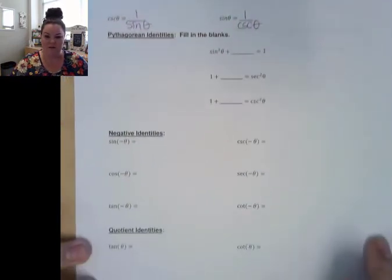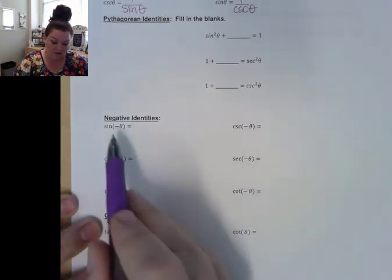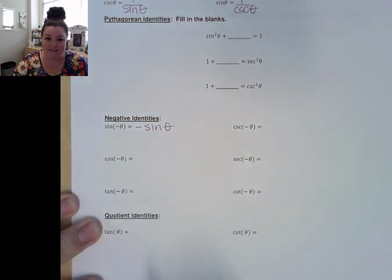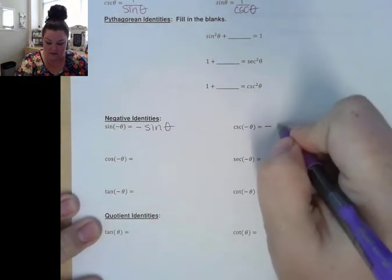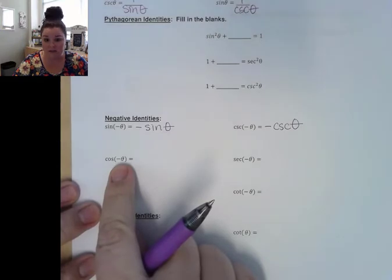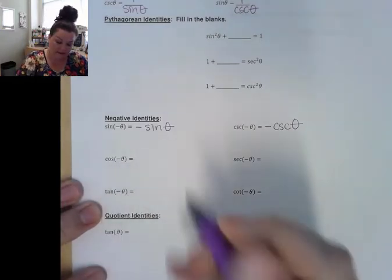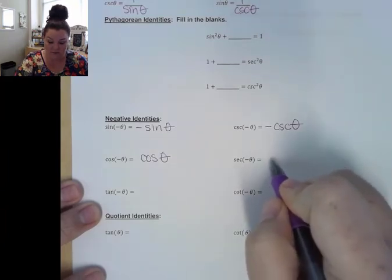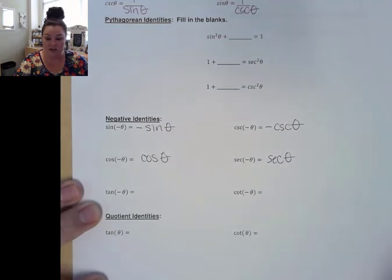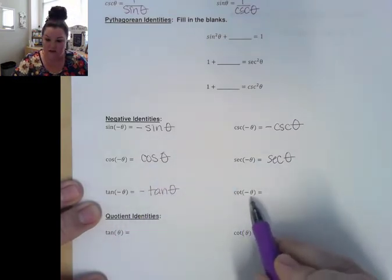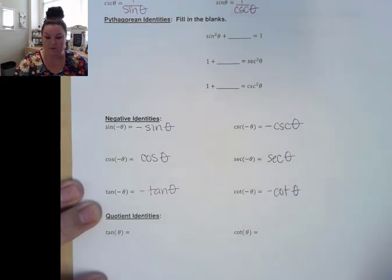I'm going to skip the Pythagorean ones for a minute just because these other ones are really easy to quickly fill in. Sine of negative theta is the same thing as negative sine theta — sines change signs. Which means that cosecant also changes sign. Cosine of a negative angle equals cosine theta. Secant also stays positive. Tangent changes signs along with sine, so tangent of negative theta gives us negative tangent theta. And cotangent of a negative angle is a negative cotangent value.